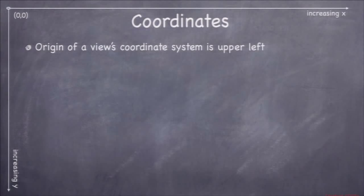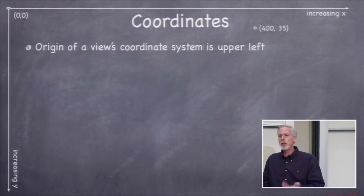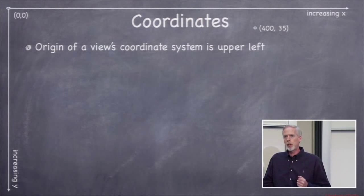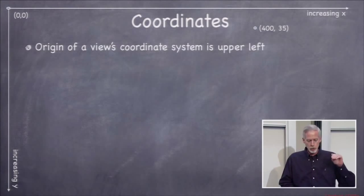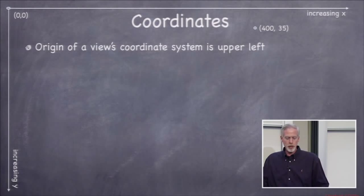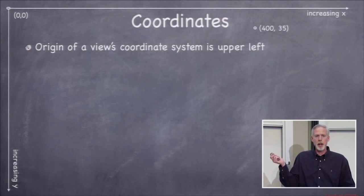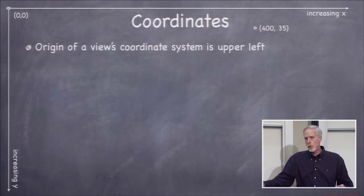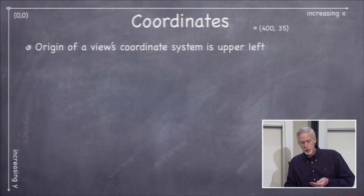The origin of a views coordinate system for drawing or for handling events is upper left, not lower left, not like Cartesian coordinates. This is drawing from the upper left. So positive Y values are down the screen. So you can see I put that point up there, 400 comma 35, that's X and Y. X is 400 way over to the right, and 35 is Y and positive, so it's down from that origin on the upper left.